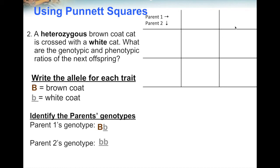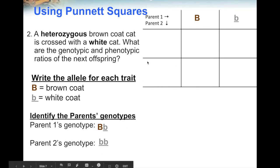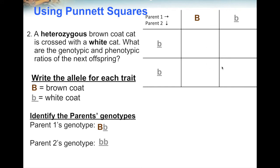Fill in the outsides of the Punnett square with each parent's genotype. For the heterozygous parent, put a letter in each space. For the homozygous recessive parent, put a lowercase b in each space. Now fill in the inside. The first two spaces: one parent gives capital B, the other gives lowercase b — heterozygous genotypes. The third and fourth spaces: one parent gives lowercase b, the other also gives lowercase b — homozygous recessive genotypes.